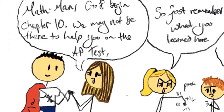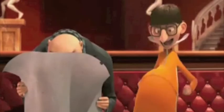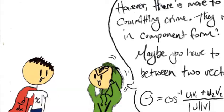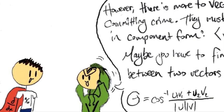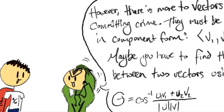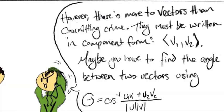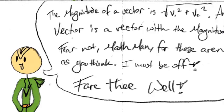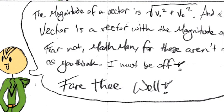3 plus x minus 1 plus 6 times x minus 1 squared over 2 factorial plus 6 times x minus 1 cubed over 3 factorial. This is a geometric series. Math man, go and begin chapter 10. We may not be there to help you on the AP test. So just remember what you learned here. Beginning the last chapter. Chapter 10. Ready? Welcome to the last chapter, math man. I'm Patty Parametrix. And I'm Patrick Poehler. And I am Vector. I'm committing crimes with both direction and magnitude. Oh yeah! However, there's more to vectors than committing crime. They must be written in component form. V sub 1 comma V sub 2.